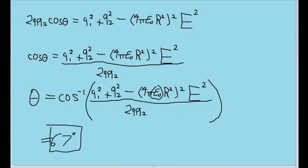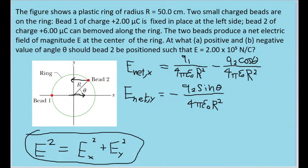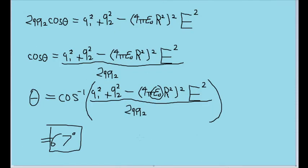So that is our positive angle, and as we established earlier, both of our answers, the positive and the negative angle, should have the same magnitude, just with opposite signs. So the negative angle is then just negative 67 degrees.